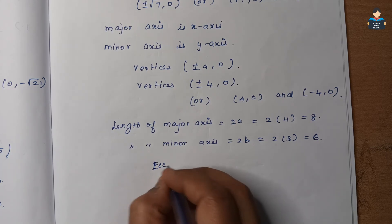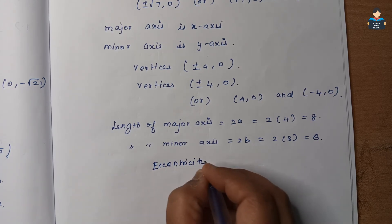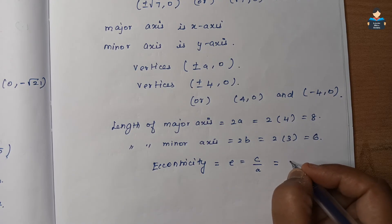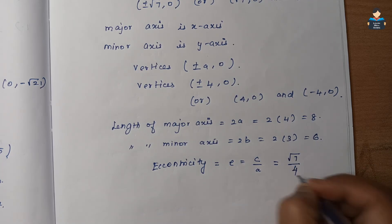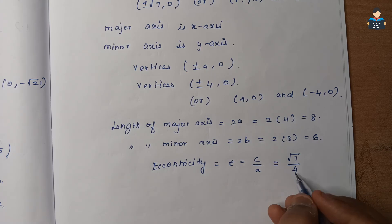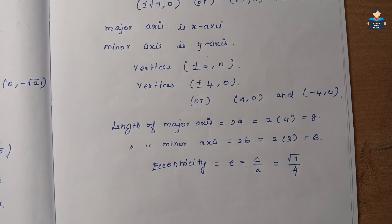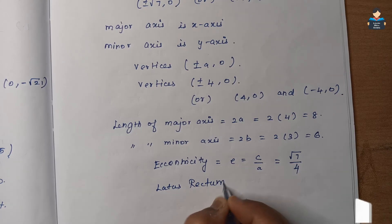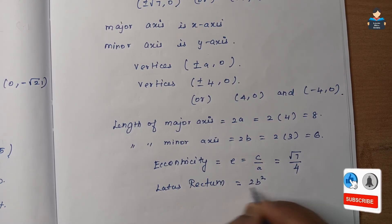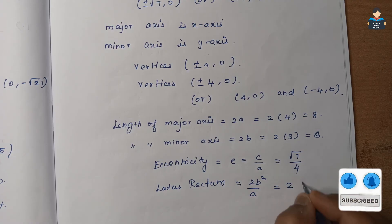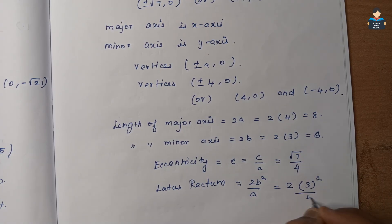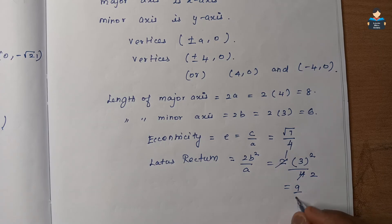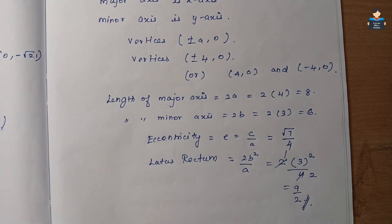Eccentricity e = c / a = √7 / 4. The latus rectum LR = 2b² / a = 2 × 9 / 4 = 9 / 2. That completes the third sum.